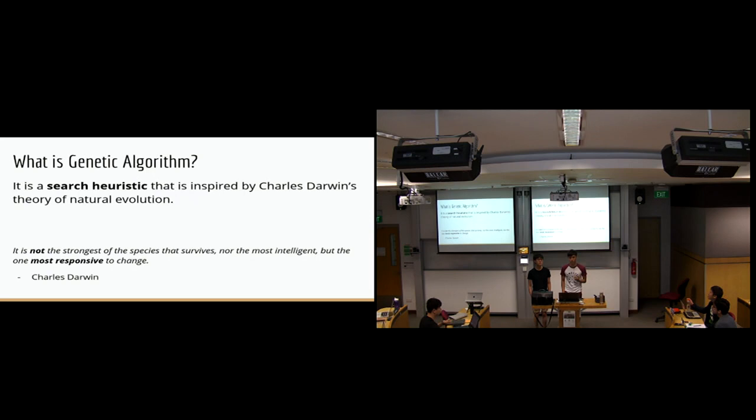What is a genetic algorithm? It is a search heuristic that is inspired by Charles Darwin's theory of natural evolution, which basically just means it's like an artificial intelligence search technique that reflects the process of natural selection, where the fittest individuals are selected for reproduction in order to produce offspring in the next generation.